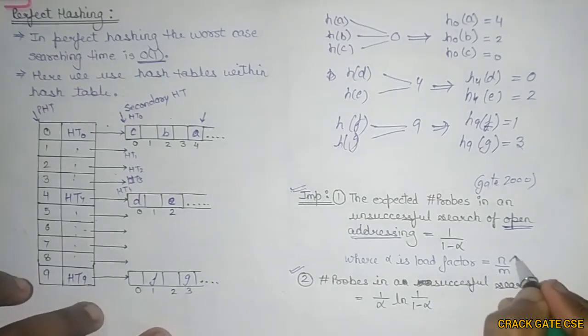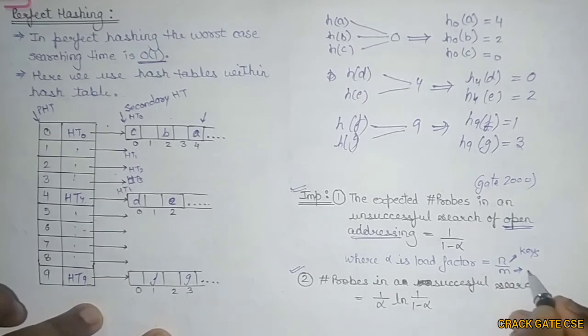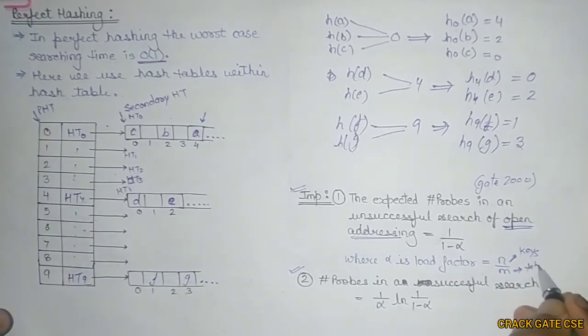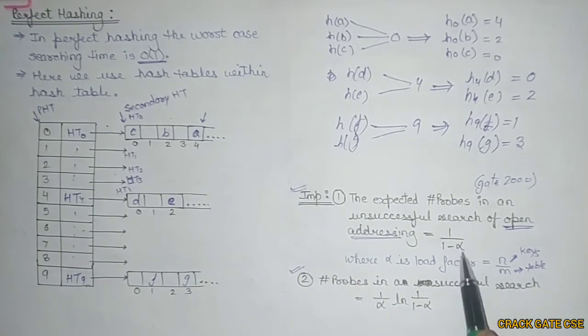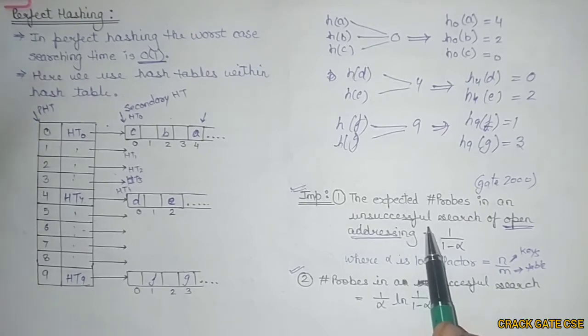The load factor is n/m, where n is the number of keys and m is the range or the size of the table. This is how you can find the alpha value, and you can put the alpha value in here - you'll be getting the number of unsuccessful probes for a search. If they're asking how many probes are required in a successful search of open addressing, then this is the formula: (1/α) × ln(1/(1-α)).